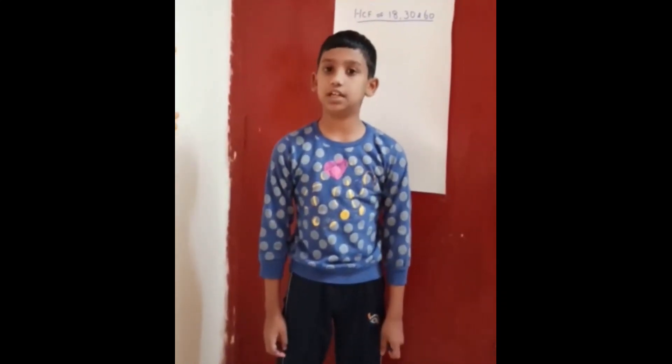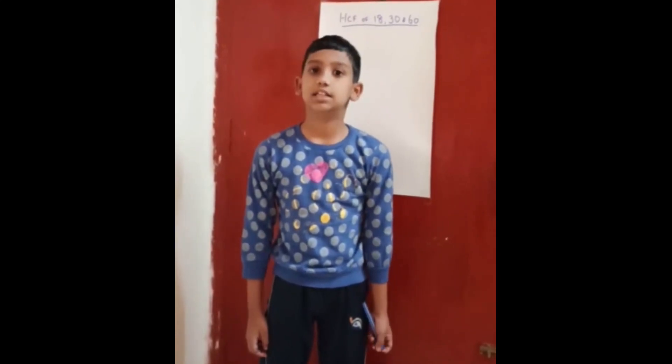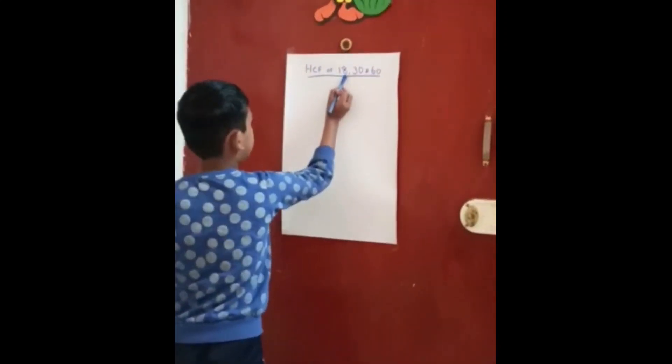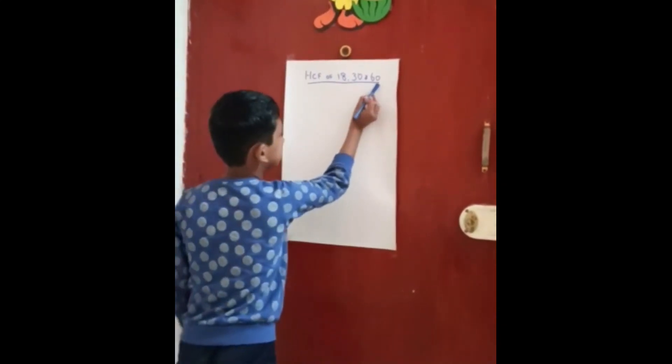Hello everyone. I am Vijay Ali from class 4B. I am going to show you how to find the HCF of three numbers using the long division method. HCF stands for Highest Common Factor. It is also called GCD — Greatest Common Divisor. Let me show you an example: find the HCF of 18, 30 and 60.